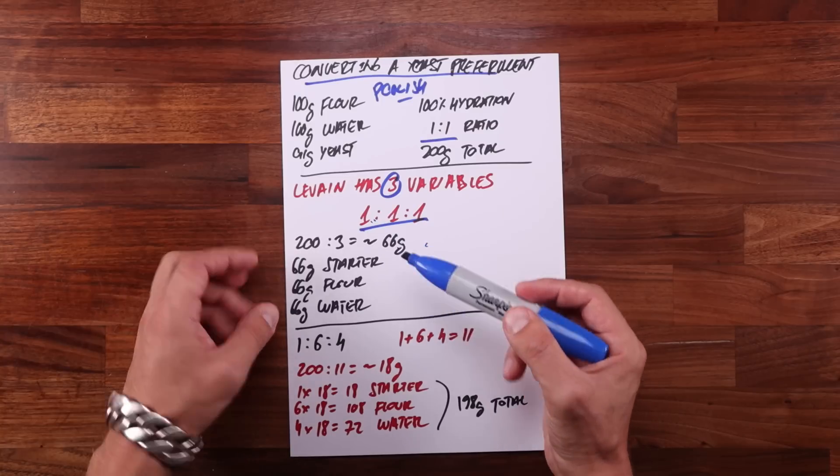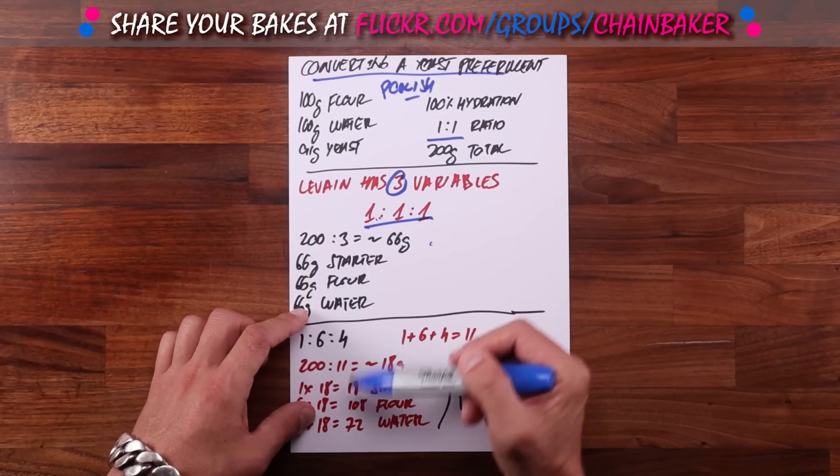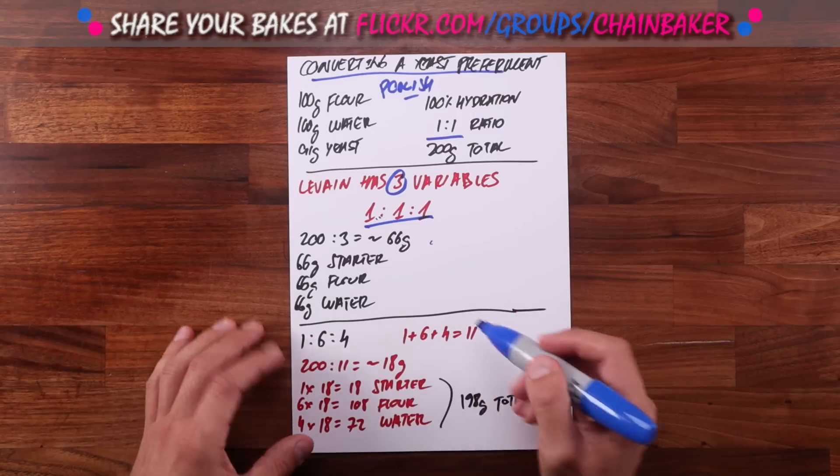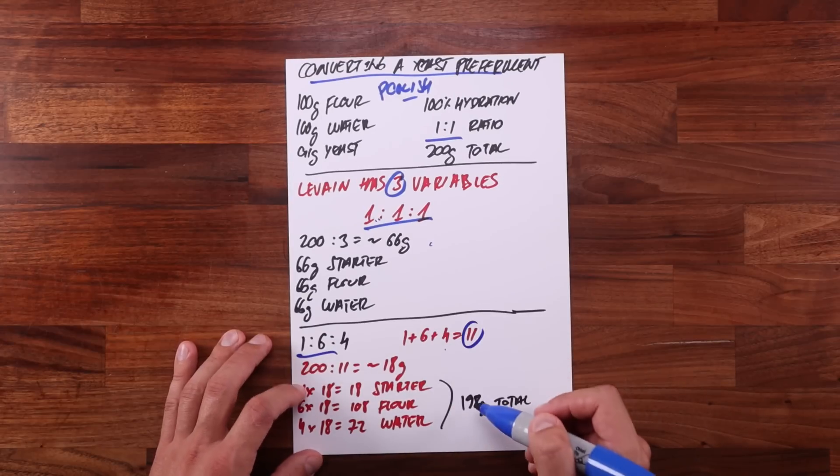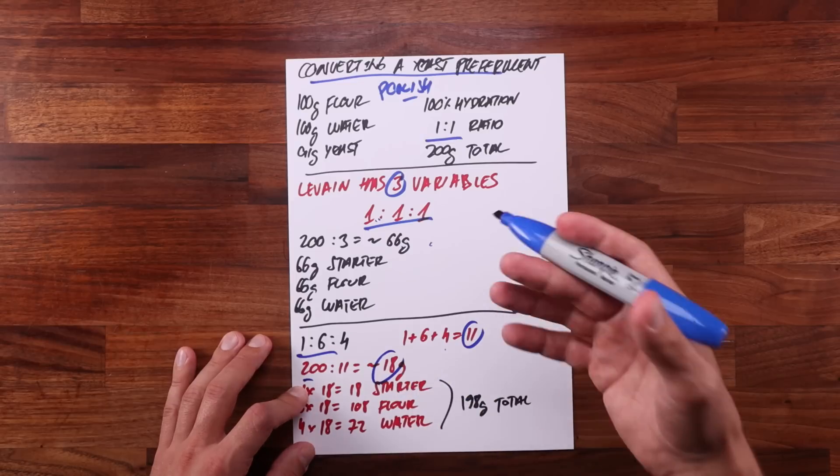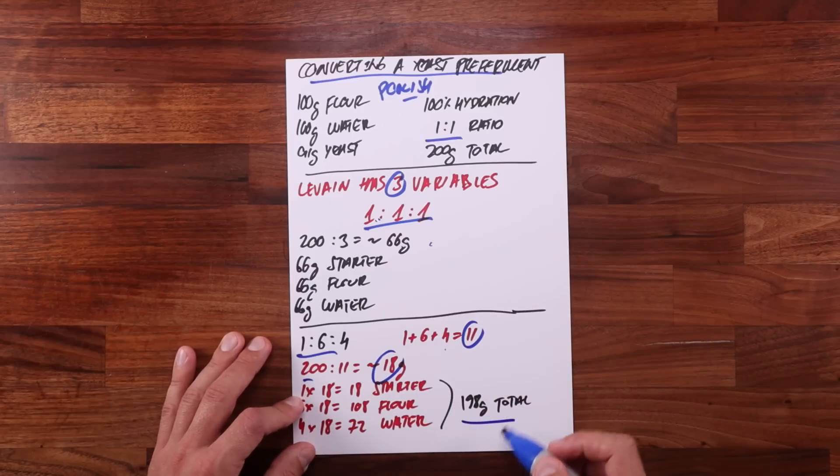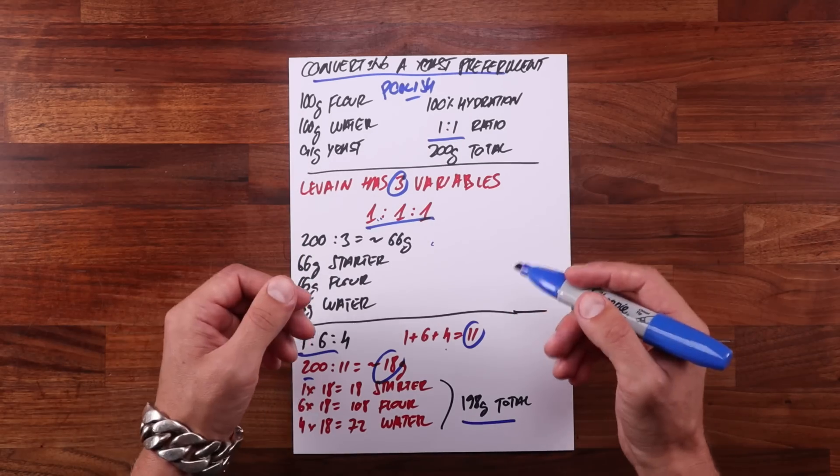But let's say we want to convert to a different ratio. Let's say we want it to be the same as in the previous example, 1 to 6 to 4. Converting from a yeasted preferment is much simpler because we already know the total weight of the preferment, which in this case is 200 grams. So adding up the ratio values we get 11. 200 divided by 11 is about 18. And now we just multiply each value by that number. And the resulting preferment comes to about 198 grams, which is close enough.